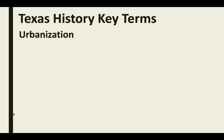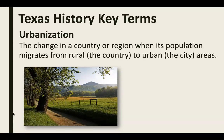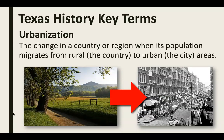Our next key term is urbanization. No doubt you've heard the term urban before. Urban has to do with the city, while the term for the country is rural. Urbanization is the change in a country or region when its population begins to migrate from rural to urban — this change from people living in the country to living in the city is called urbanization.